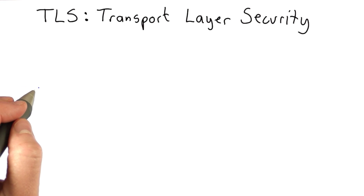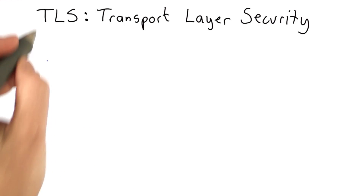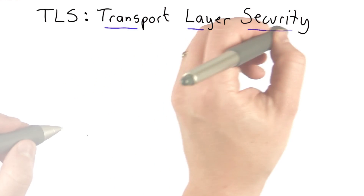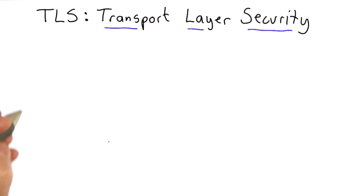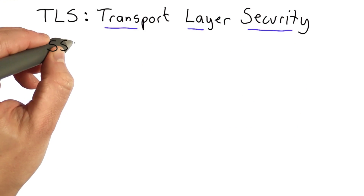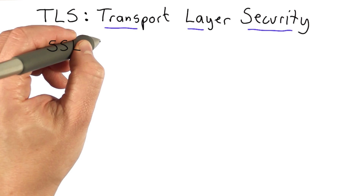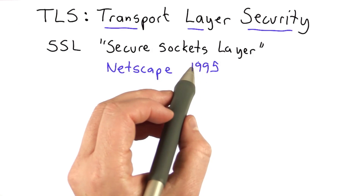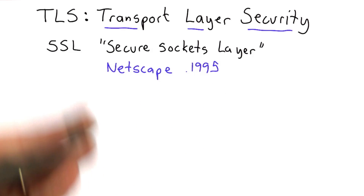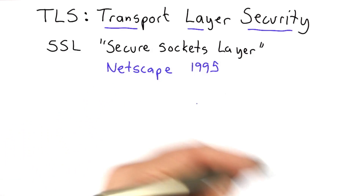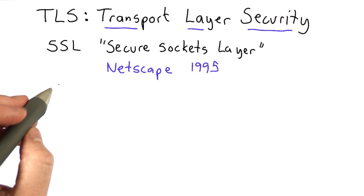The next protocol I'm going to talk about is called TLS, which stands for Transport Layer Security. It's also sometimes referred to by its old name, SSL, which was Secure Sockets Layer. This was a protocol invented by Netscape in 1995 with the goal of enabling clients — meaning web browsers and web servers — to be able to communicate securely.